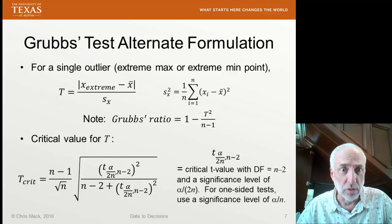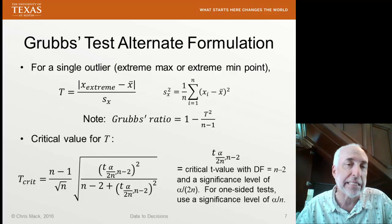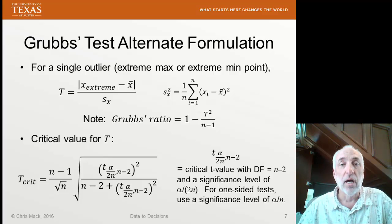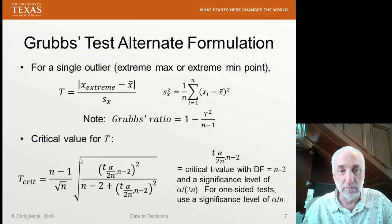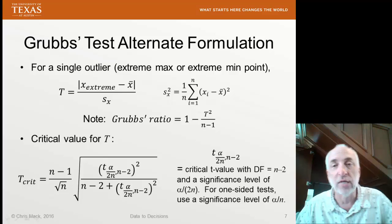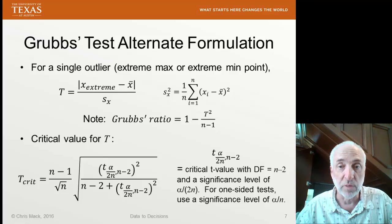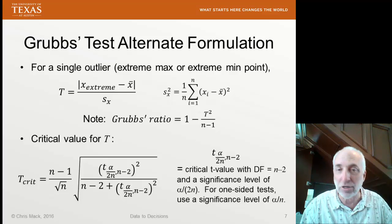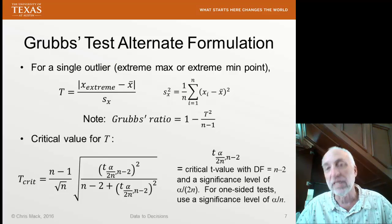A table of critical values is provided on the course website associated with this lecture. There is an alternate formulation useful for a single outlier: we calculate T for that potential outlier (the extreme max or extreme min point) in the standard way. For the case of a single outlier, this T value is related to the Grubbs ratio simply as: Grubbs ratio = 1 minus T squared over (n minus 1). So if you have the Grubbs ratio critical value, you can calculate the critical T value and vice versa.